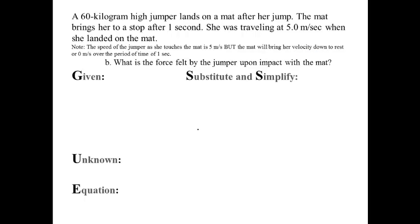We have the same situation. A 60 kilogram high jumper lands on a mat after her jump. The mat brings her to a stop after one second. She was traveling at 5 meters per second when she landed on the mat. From the last question, I know that change in momentum is negative 300 kilograms times meters per second. But I'm also given this information time is one second.